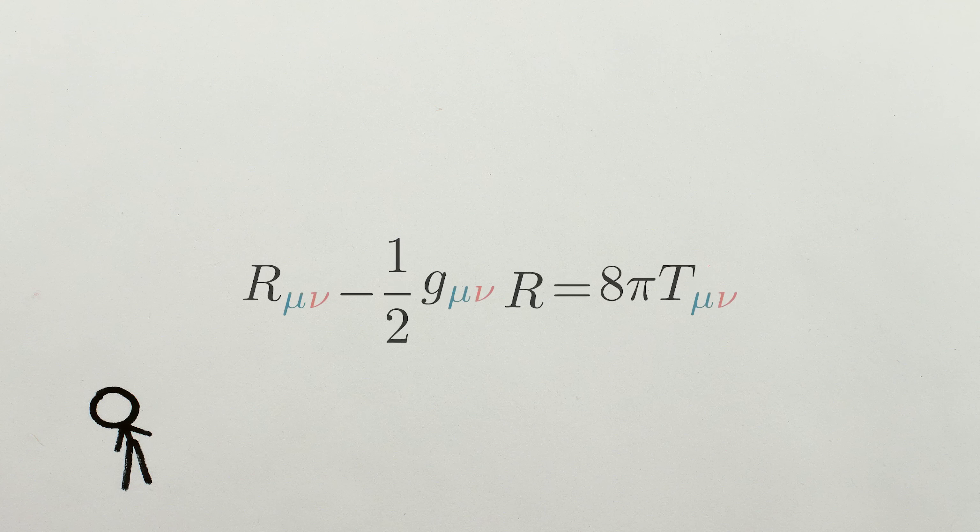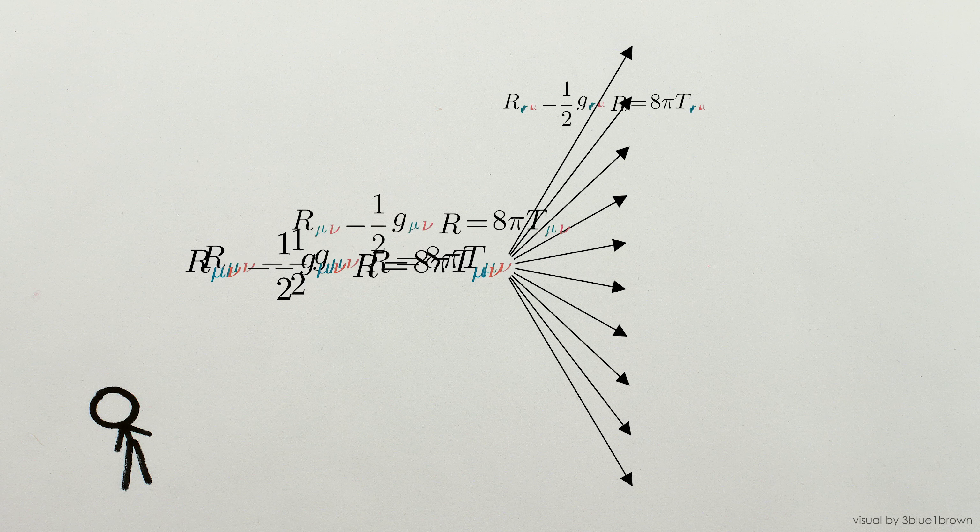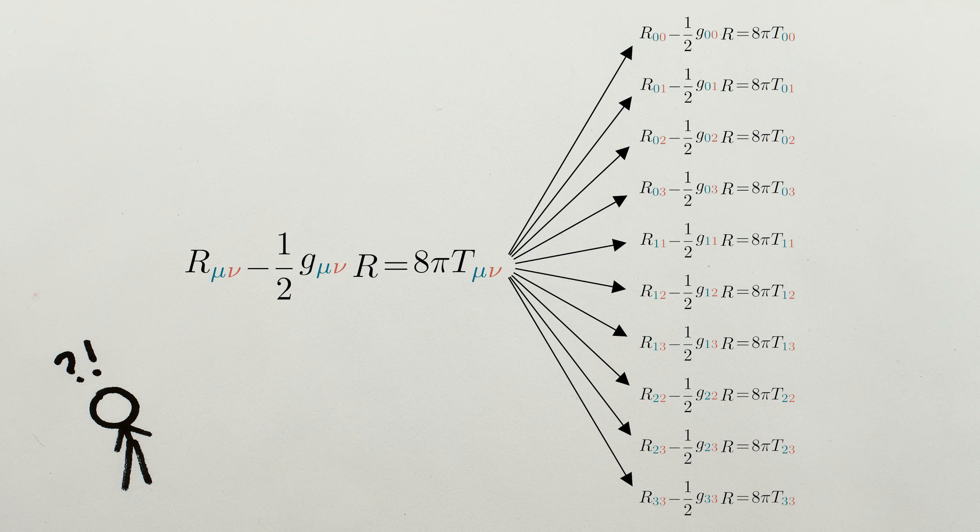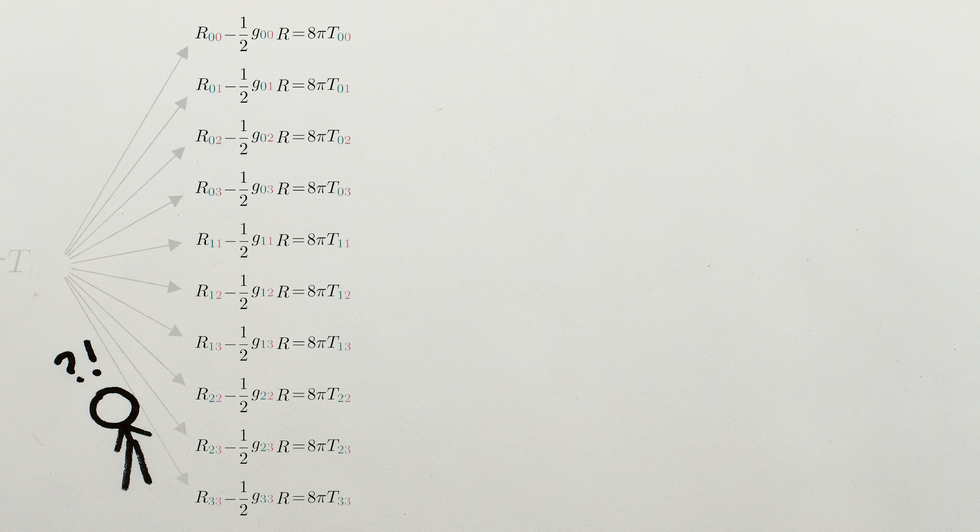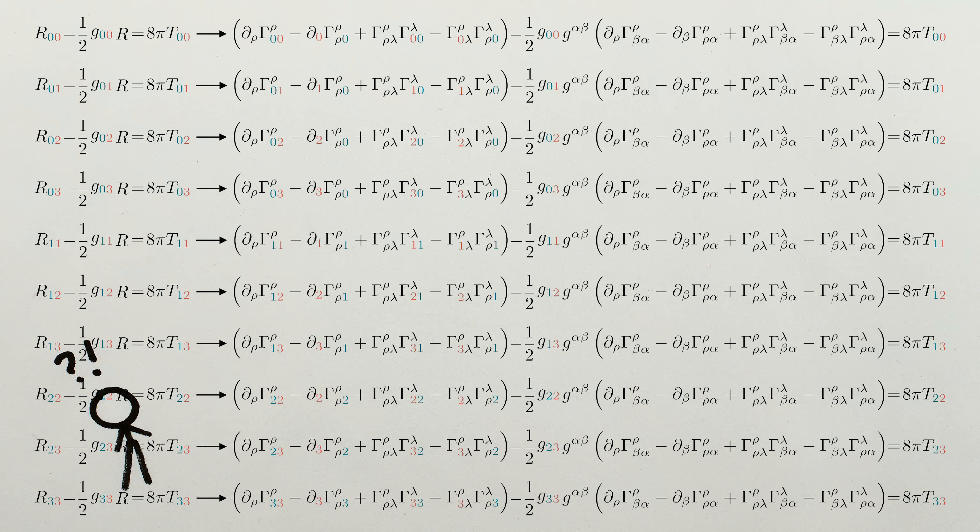The equation, however, is deceptively simple. This one single line is in fact an incredibly fancy shorthand for what's actually a system of ten second-order partial differential equations relating mass and energy to the curvature of spacetime. And the r's themselves are also a shorthand. But the point is this.